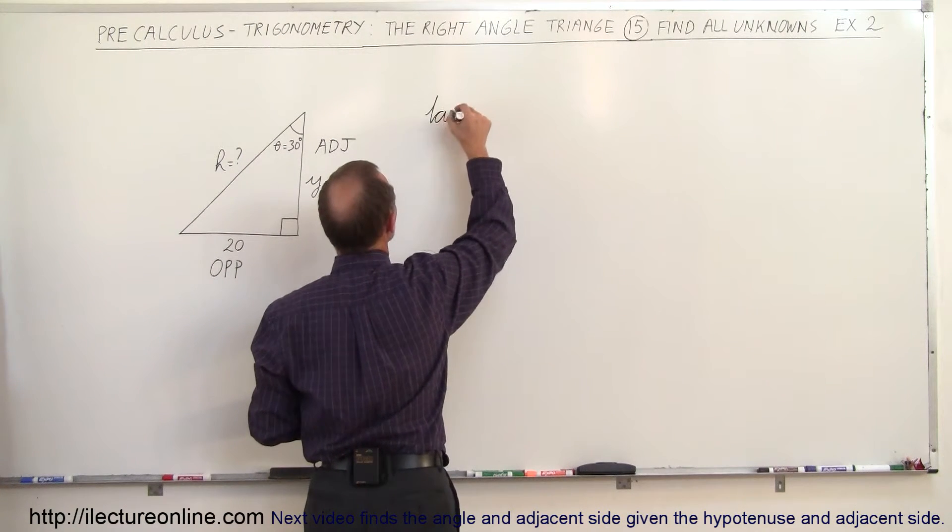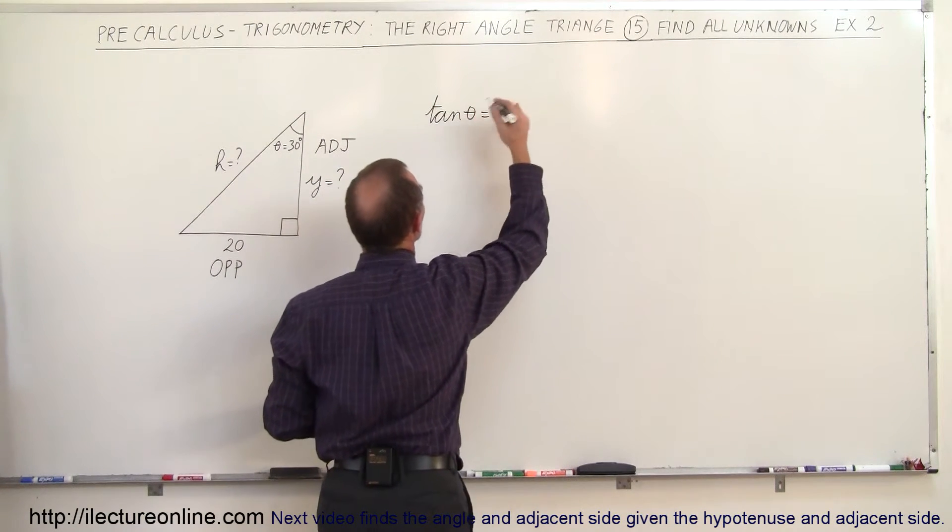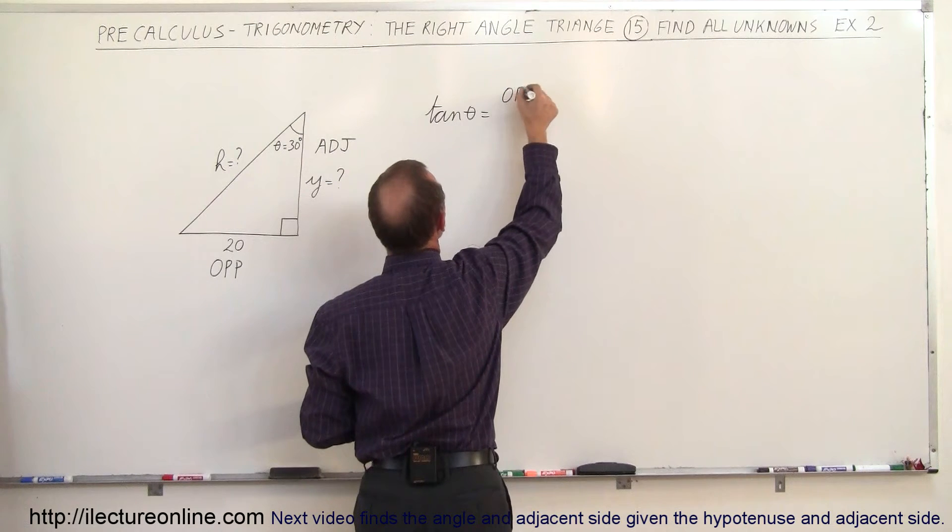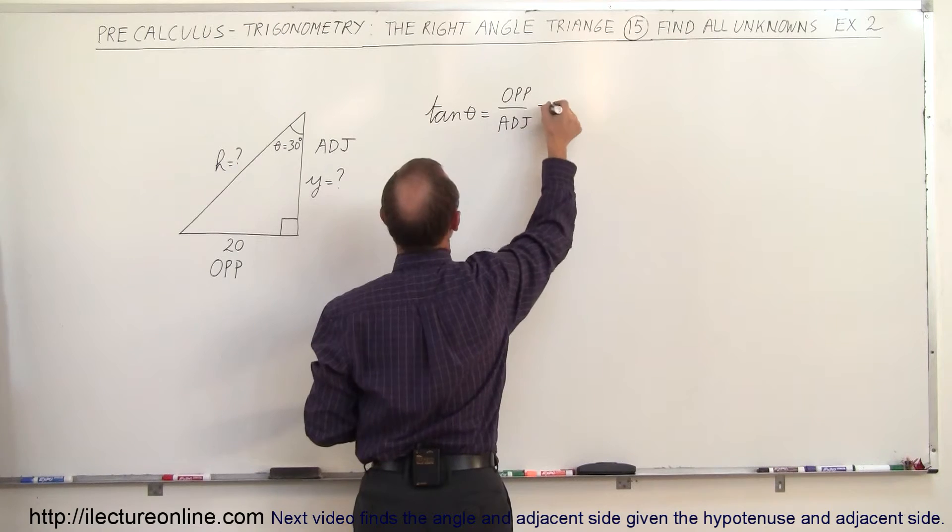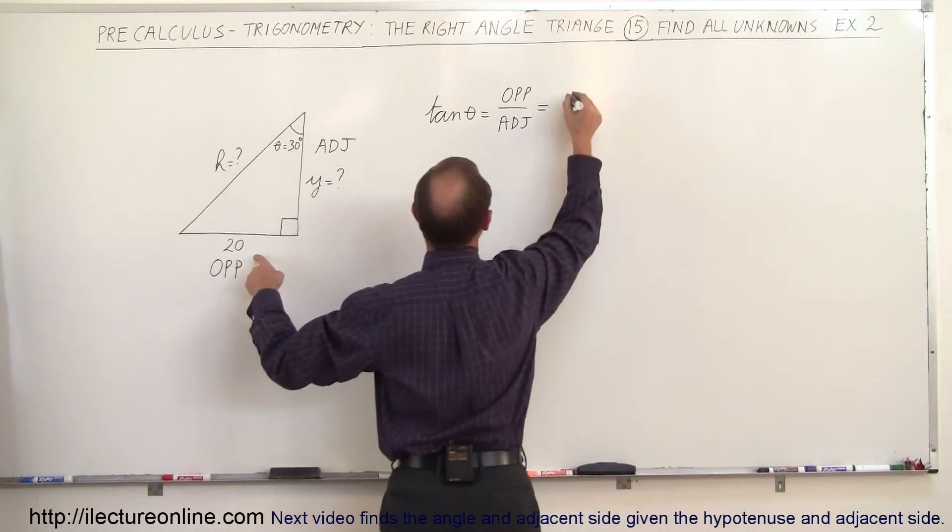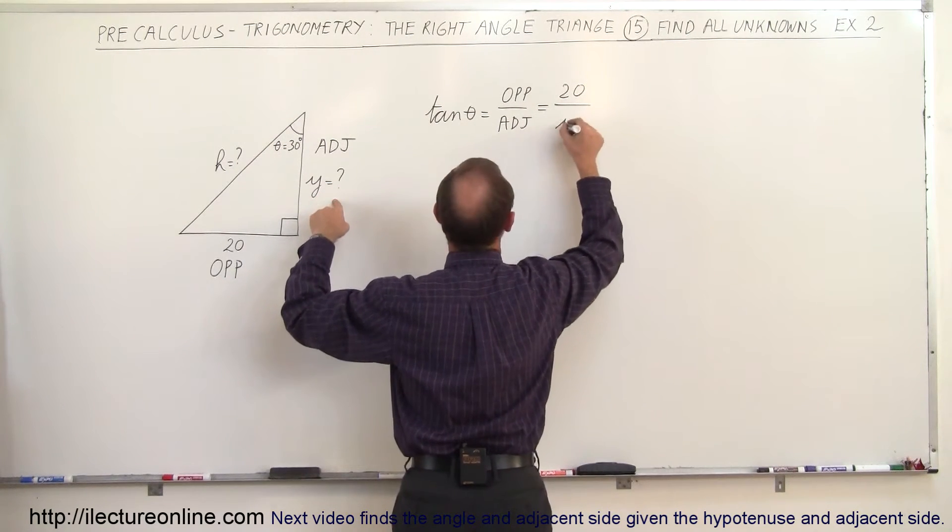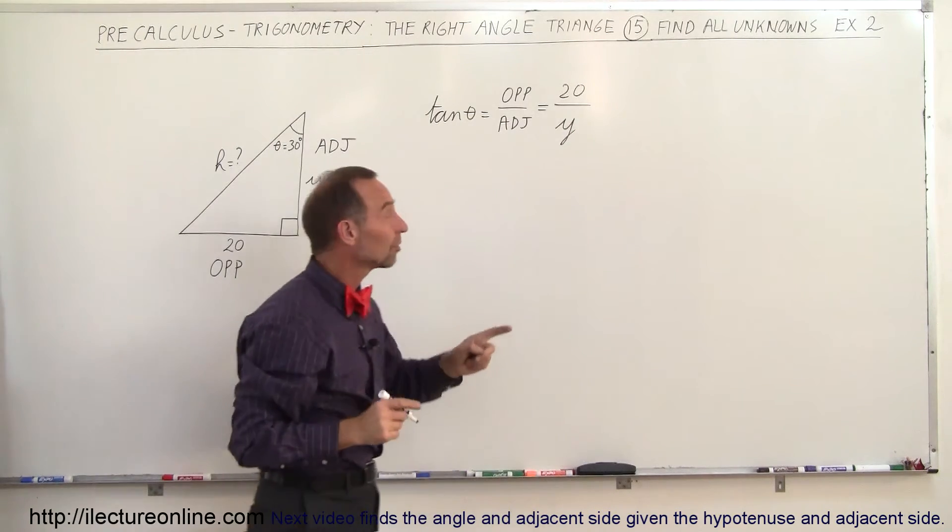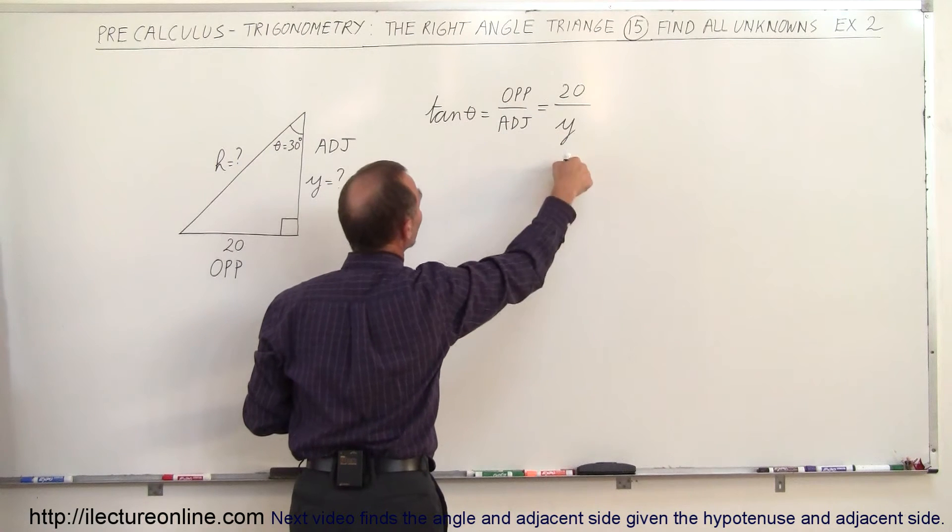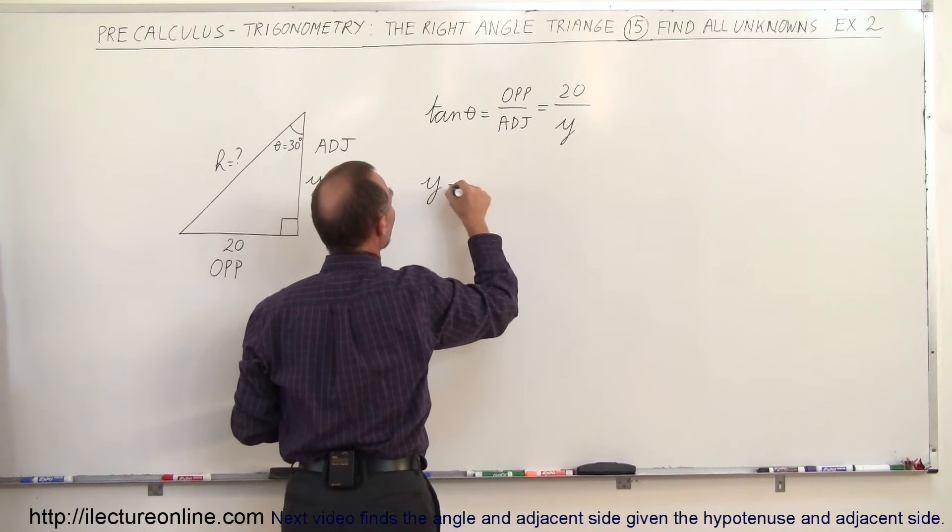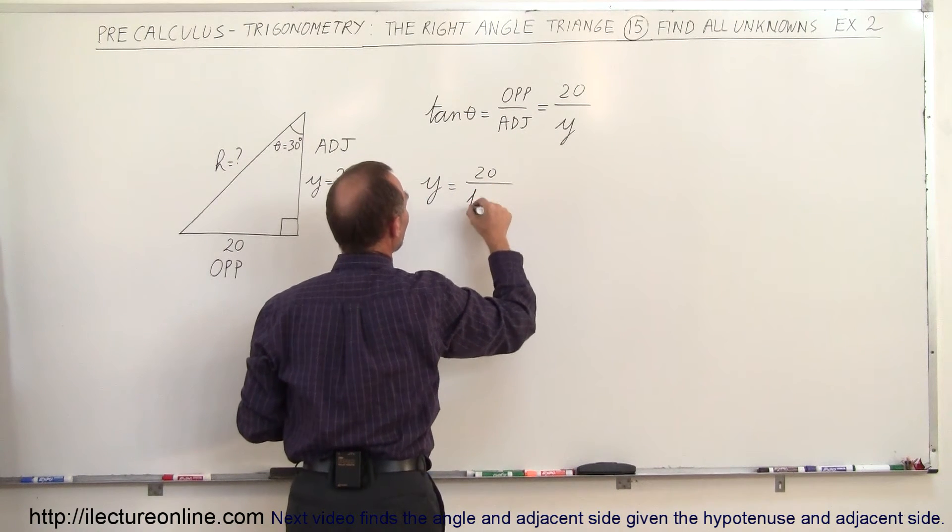By definition, the tangent of theta is equal to the ratio of the opposite side divided by the adjacent side. So in this case, the opposite side is 20, and the adjacent side is the unknown that we're looking for, which is Y. That means we can solve that equation for Y. We can move the Y over here, the tangent down there, so Y now becomes 20 divided by the tangent of theta.